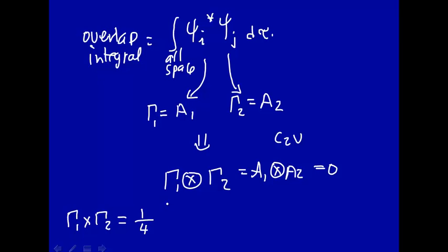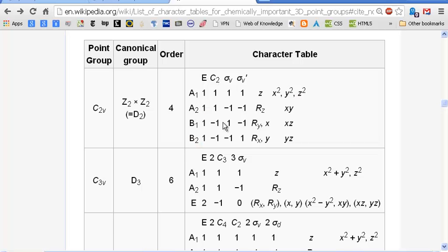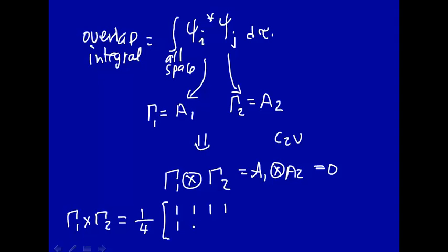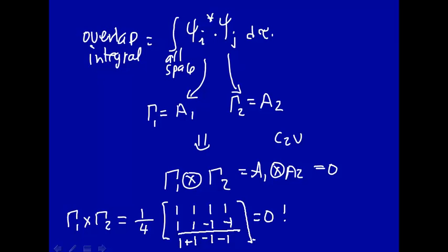So it would be one-fourth times this multiplication. A1, the totally symmetric representation, is all ones: 1, 1, 1, 1. And A2 is ones and minus ones: 1, 1, −1, −1. We multiply these together and add them: 1 + 1 − 1 − 1 = 0. We divide by four, but we don't have to because that's already zero. So just by looking at the symmetry of the orbitals, we can tell the integral has to be zero — we don't have to do the full calculation. If you do have an A1 representation, the integral may be zero but doesn't have to be zero because of symmetry.